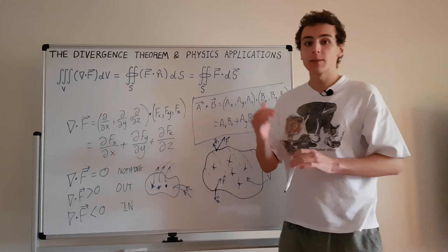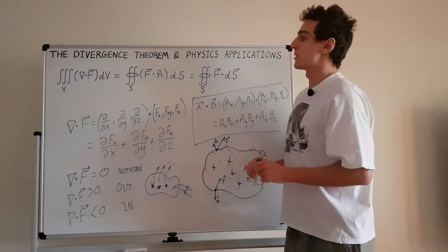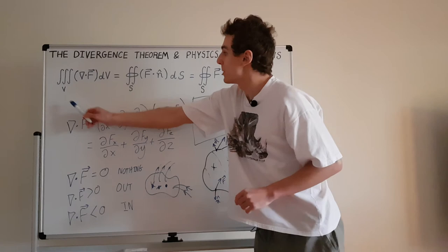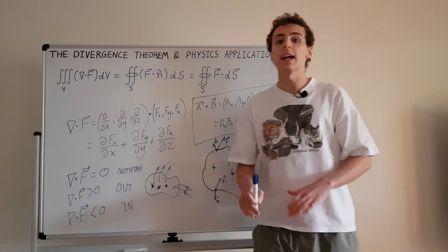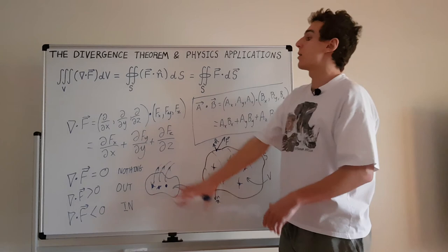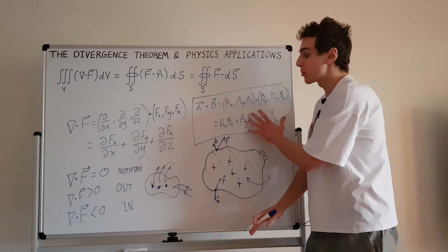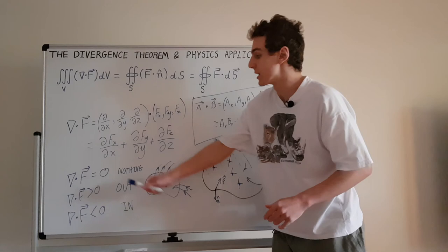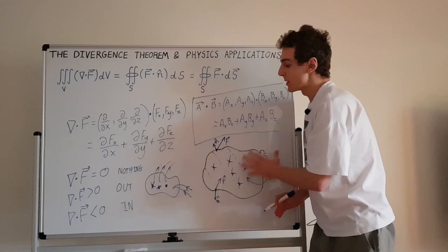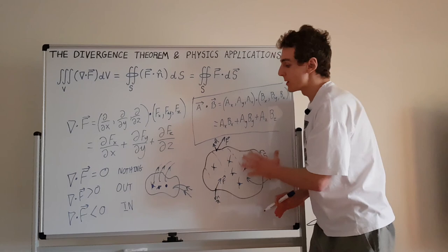In summary, we've discussed the divergence theorem: taking the divergence and then the volume integral of that divergence is equivalent to the surface integral of a vector field F. We covered how to compute divergence, what the dot product is, and the conditions for when divergence is zero, positive, or negative. We also looked at physical intuitive explanations and applications for enclosed surfaces forming boundaries for volumes.